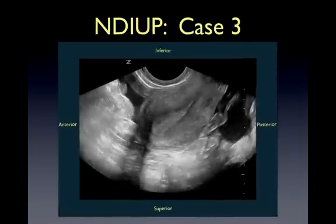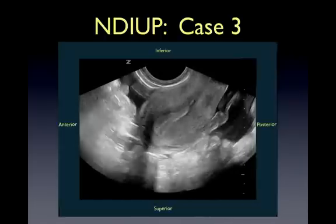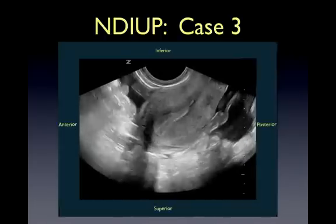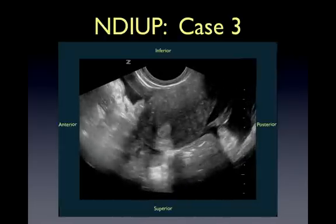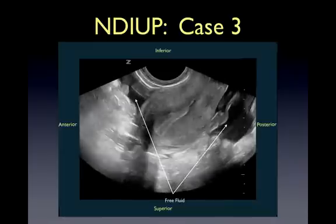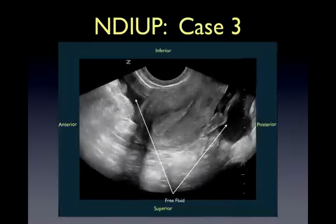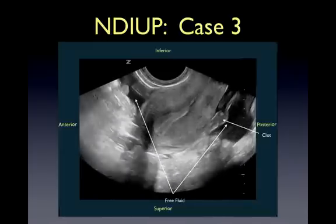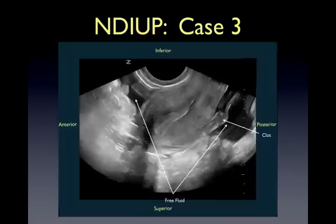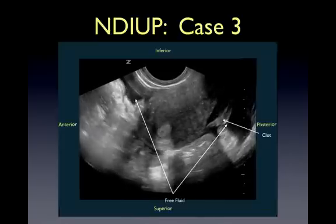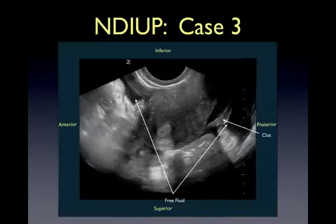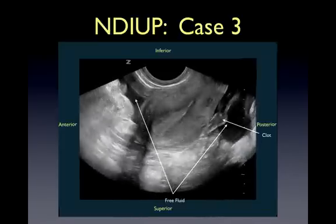This third case of an NDIUP shows an empty uterus viewed sagittally with surrounding free fluid, as well as hyperechoic material likely representing clot. In any HCG-positive female with an empty uterus and free fluid, always suspect ruptured ectopic.